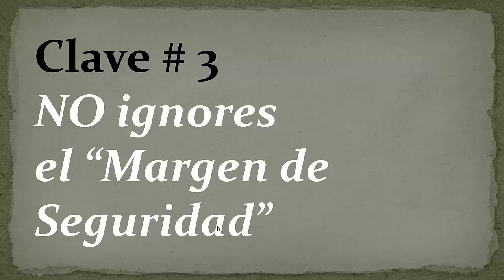Clave número 3: No ignoremos el margen de seguridad. Si una empresa distribuye todos sus ingresos a través de dividendos, no tiene margen de seguridad. Cuando las cosas se ponen difíciles, como en un contexto de recesión, una de las primeras medidas que toman las empresas es reducir el dividendo. Una compañía que incrementa los pagos de dividendos a través del tiempo es muy bueno, pero hay que estar muy atento para detectar aquellas que intentan seducir al accionista con un dividendo desorbitante y poco seguro.